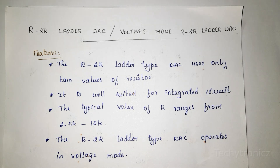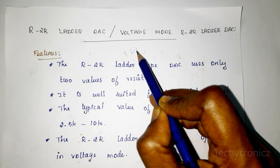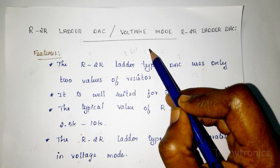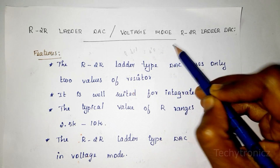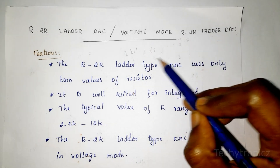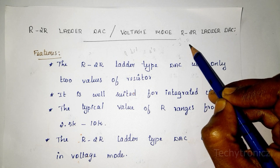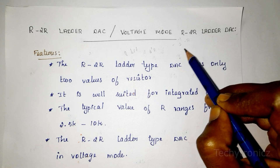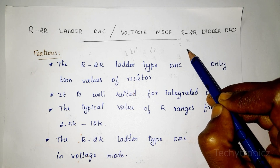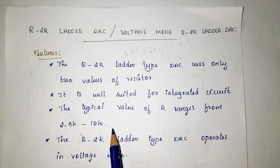But in a weighted resistor DAC, we need a wide range of resistor values. For example, if you are using an 8-bit DAC, the range of resistor values is from 2 power 0 into R to 2 power 7 into R — the value of resistor is very high. Wide range of resistors is used in weighted resistor DAC, and when the number of bits increases, the range of resistance values also increases. But in R2R Ladder, we need only two values of resistor.